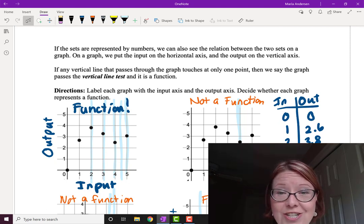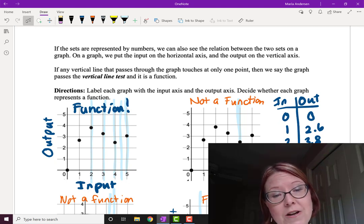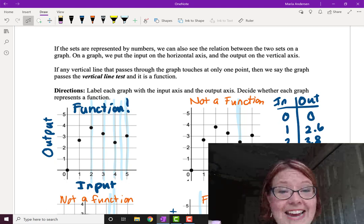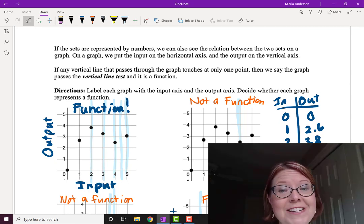we learned about the vertical line test. If we can graph the function, in other words if both sets are numbers, then we put the input on the horizontal axis and the output on the vertical axis. The vertical line test says that any vertical line that passes through the graph can touch at only one point. And if that's true, we say the graph is a function.